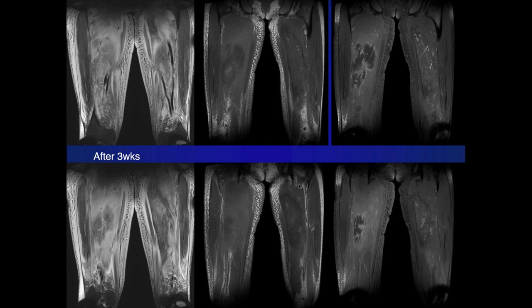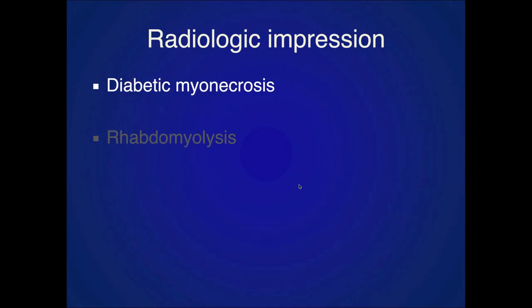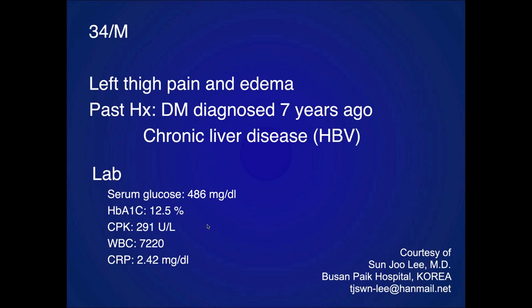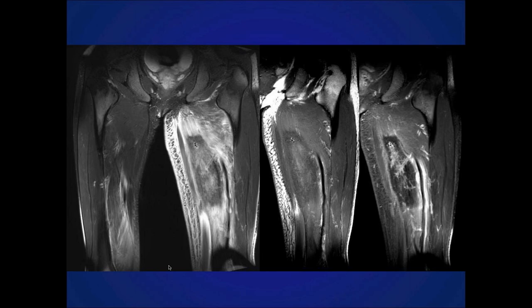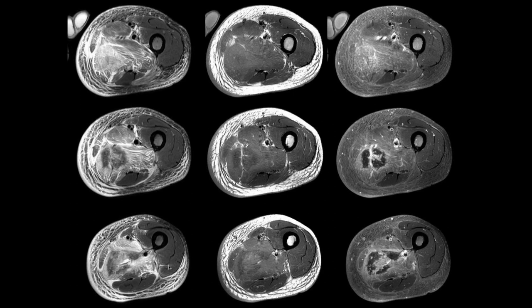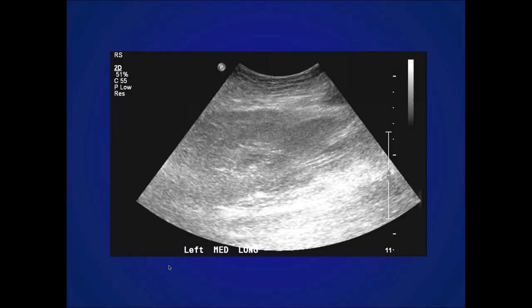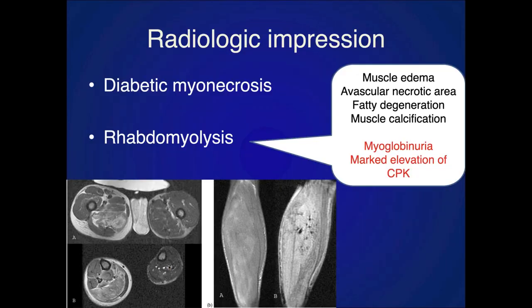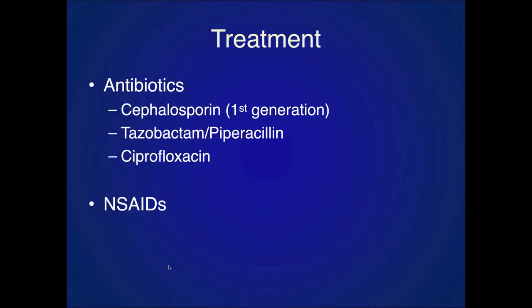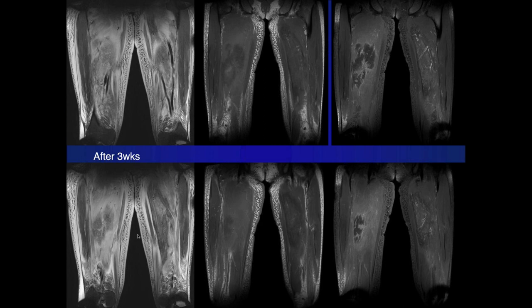Here's three weeks later. The CRP was elevated at 2.4, which is not very high. The relatively normal white count and modest CRP push away from infection.